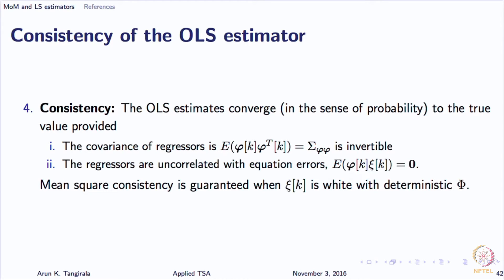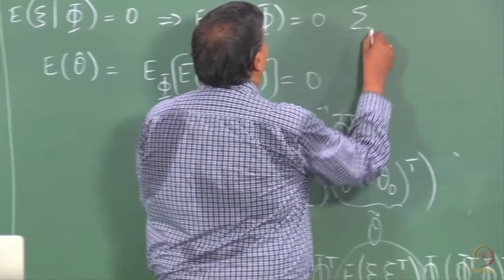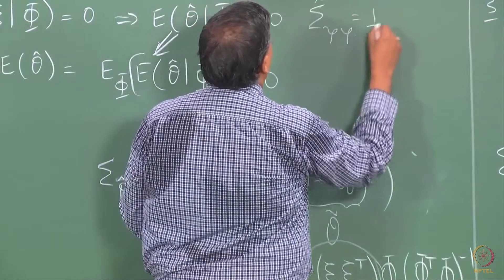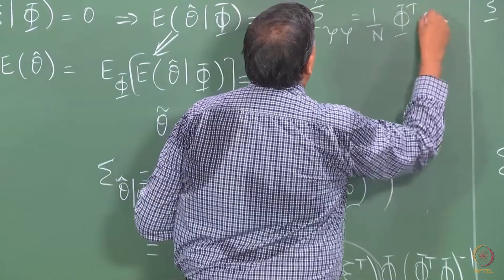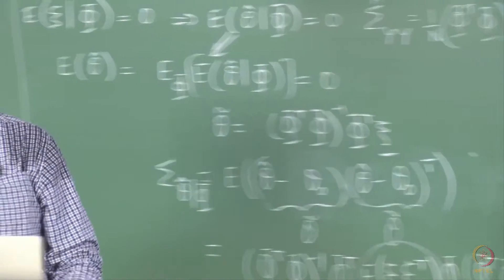One is that the regressors, the covariance matrix of the regressors is invertible. I am giving you the result on the theoretical covariance, that is expectation of Zk times Zk transpose. What this means in practice is this phi transpose phi that you see here should be non-singular, because remember an estimate of the theoretical covariance is 1 over N phi transpose phi.